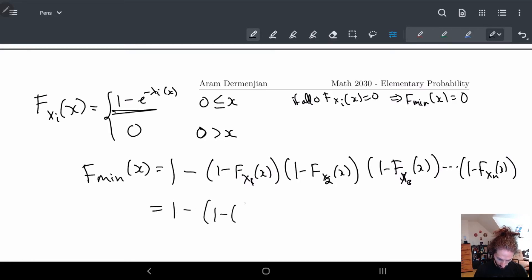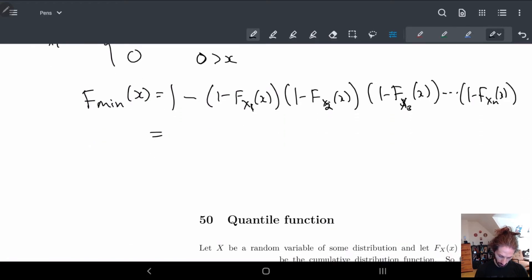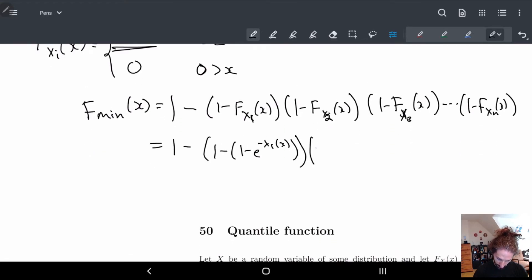So we have one minus (1 - e^(-λ₁x)), one minus (1 - e^(-λ₂x)). There's a lot of minuses, and a lot of parentheses. Okay, we'll stop here. Dot, dot, dot. One minus (1 - e^(-λₙx)), et cetera. So let me look at one of these on the side.